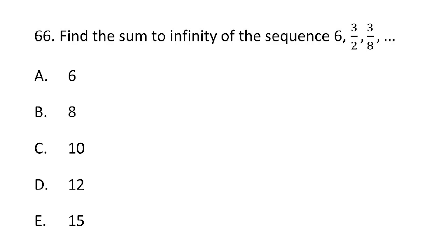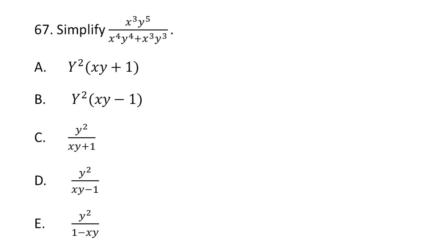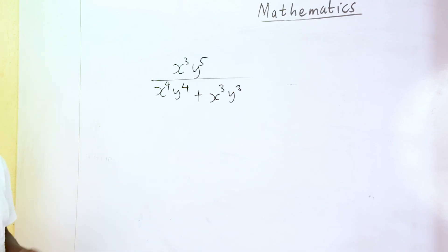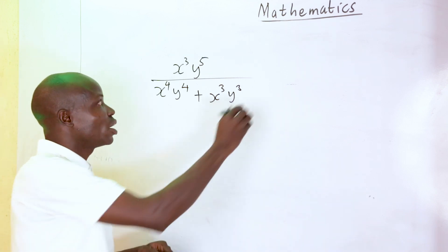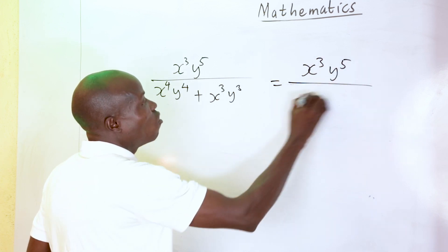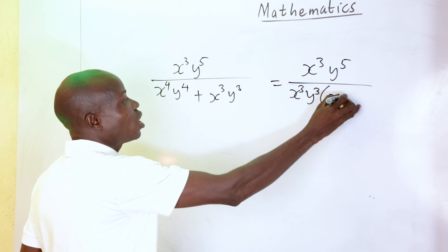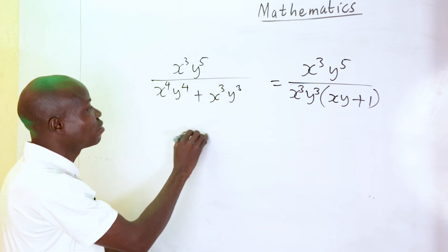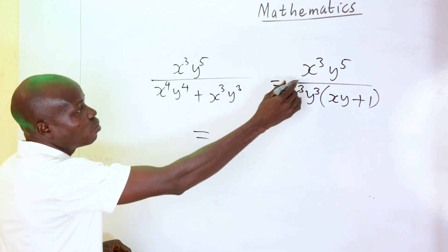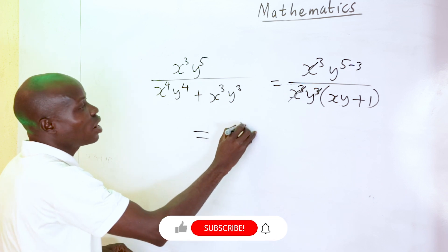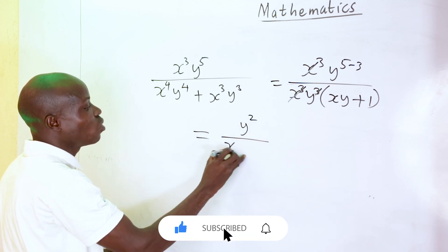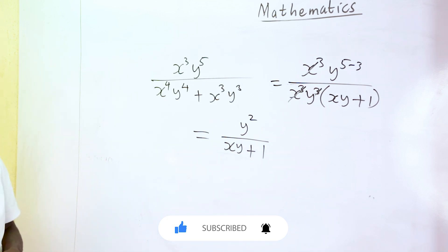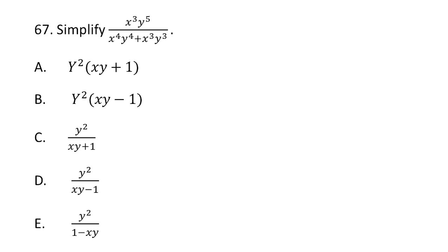Question 67: simplify x cubed y to the 5th over (x to the 4th times y to the 4th plus x cubed times y cubed). Factorizing the denominator gives x cubed y cubed(XY plus 1). Dividing numerator by the common factor leaves y squared over (XY plus 1). That matches option C.